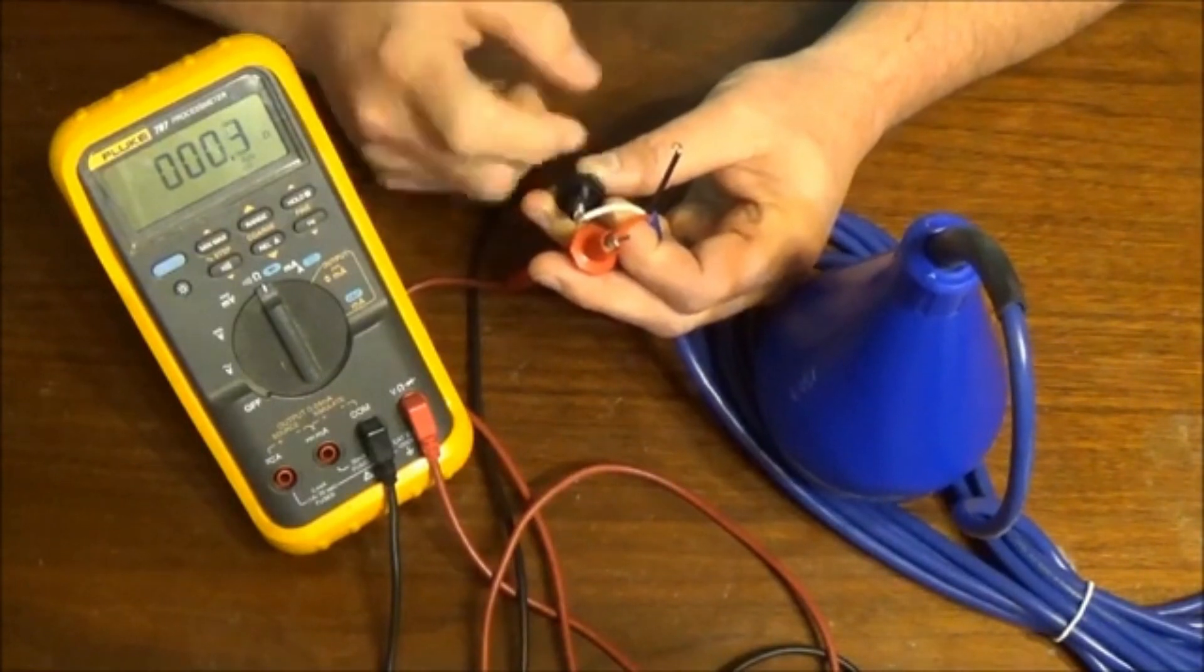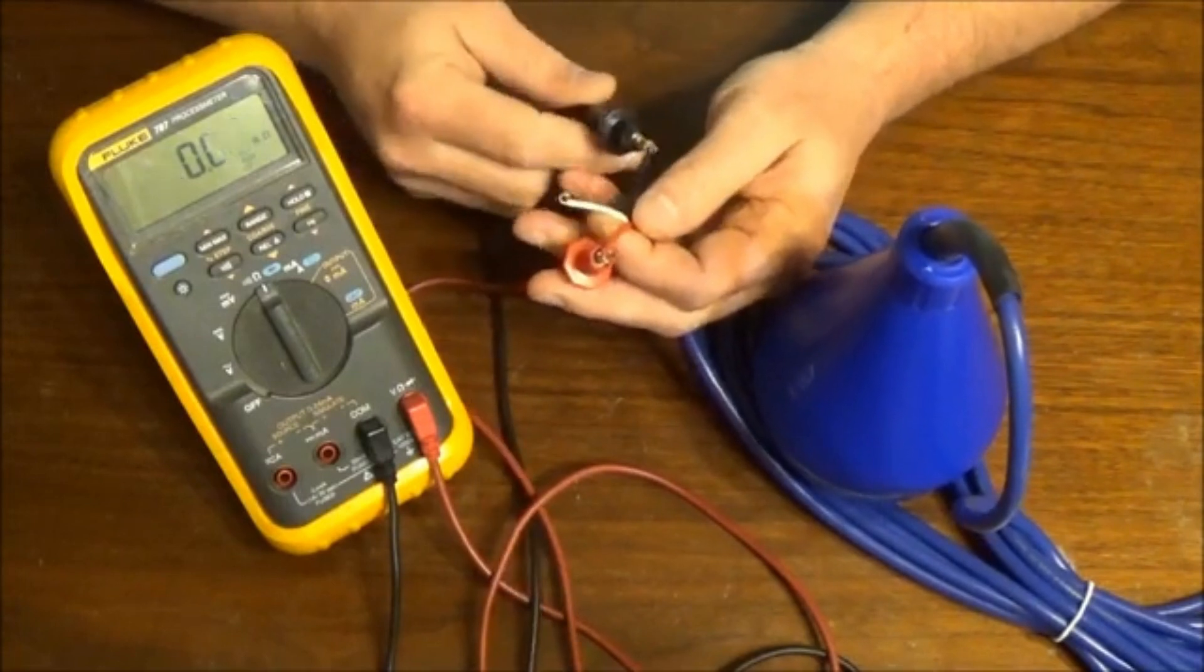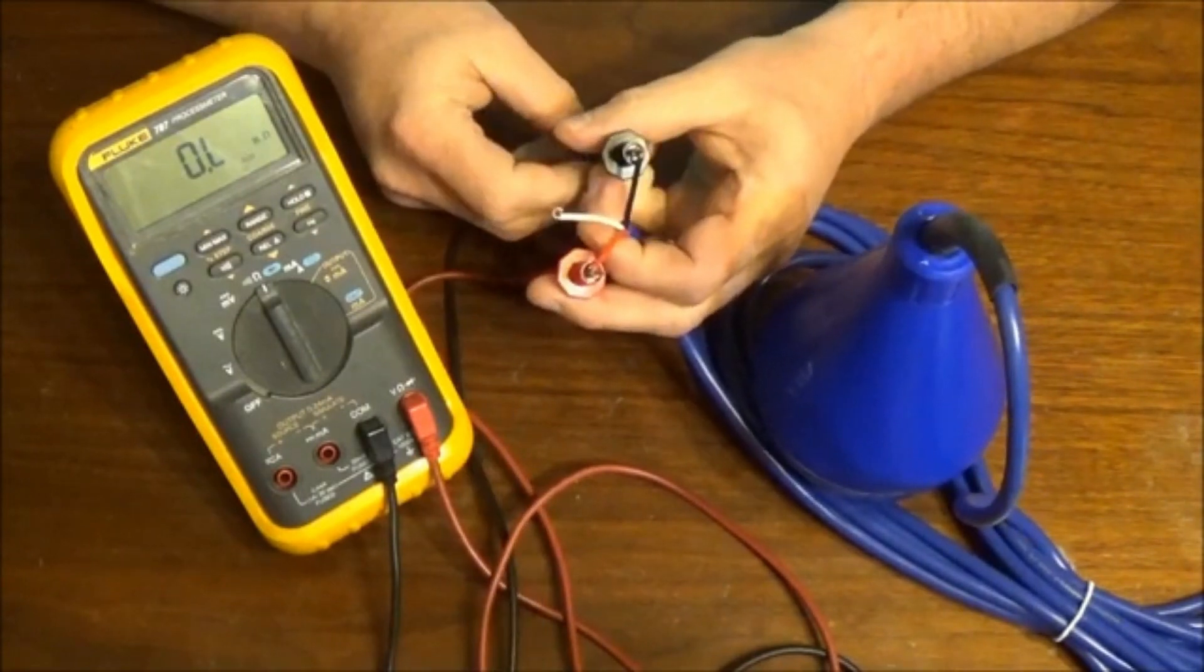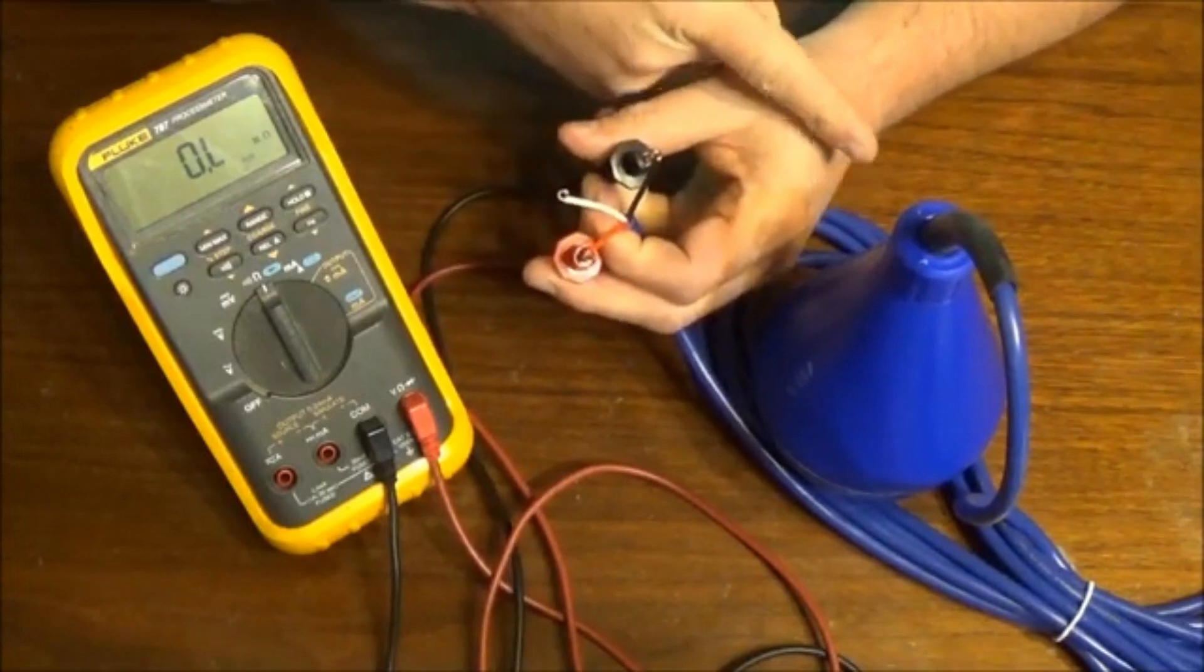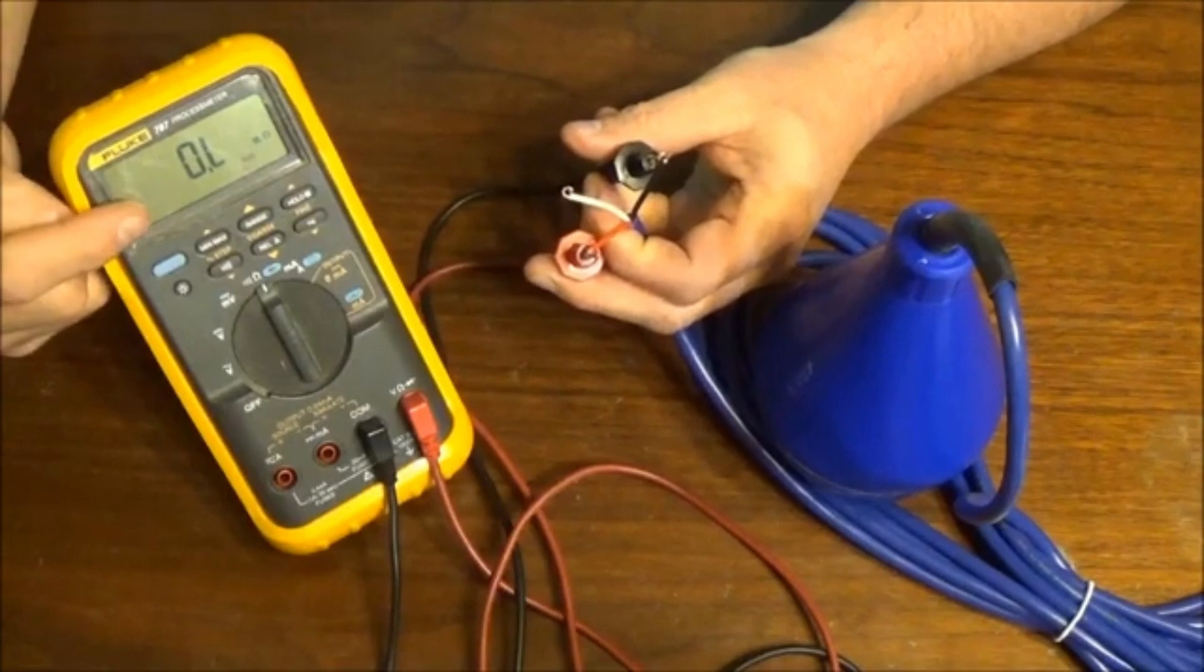Now, if we leave our lead on the red conductor, move to the black, we should see just the opposite. The float is in the upright position. The meter is reading an open condition.